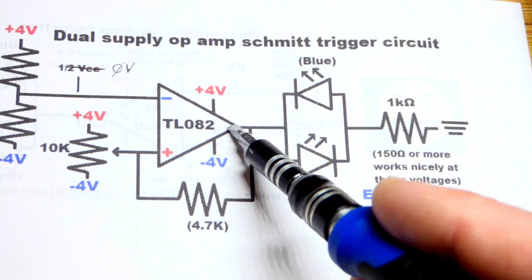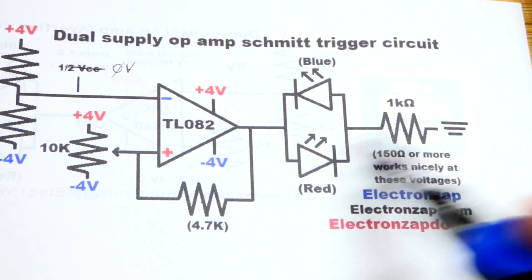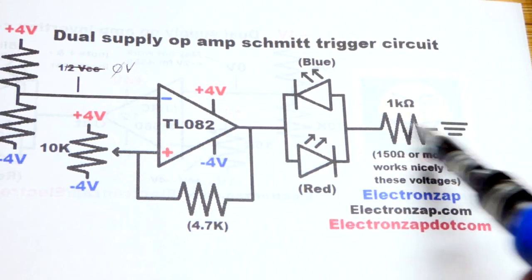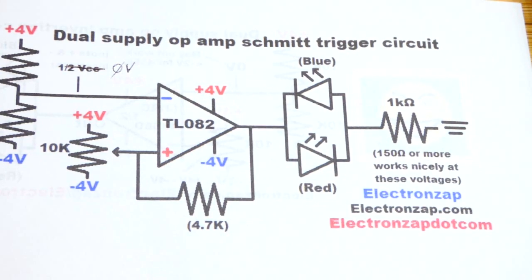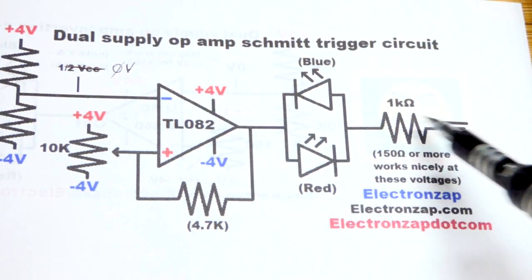When the output is low, basically as close to negative four volts as it can go, then the blue LED will light up. When it's high, it'll get as close to positive four volts as it can.